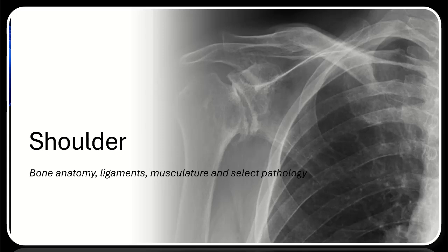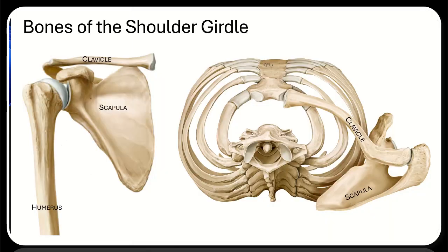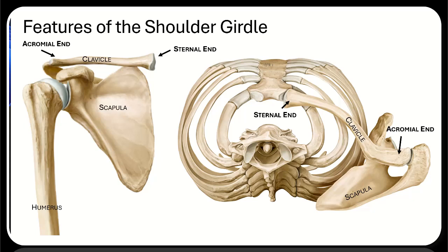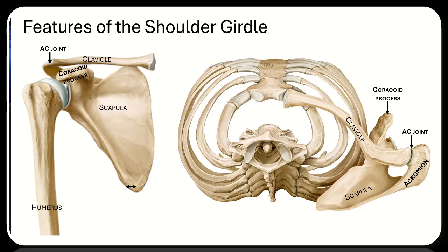Let's go over some basics of shoulder anatomy and imaging. The shoulder girdle is made of the three bones that attach our upper limb to our axial skeleton. On the clavicle, we have the sternal end and the acromial end. Just across from that is the acromion, also known as the acromial process of the scapula. The ligamentous connection between the scapula and the clavicle is the acromioclavicular joint, or AC joint. The protruding structure over the joint itself is another scapular structure, the coracoid process.